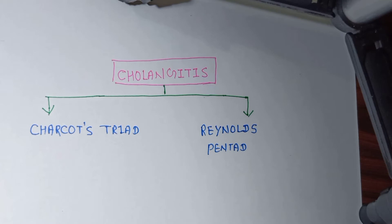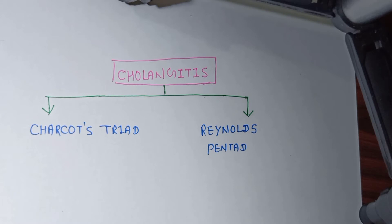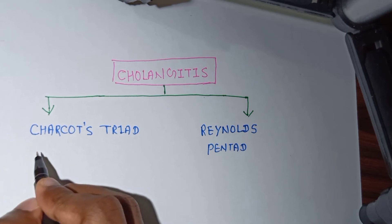Now we will discuss the clinical presentation of cholangitis. There are two key clinical presentations we can see in the diagram: the Charcot's triad and the Reynolds' pentad. We will use mnemonics to memorize these clinical presentations.